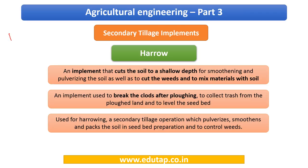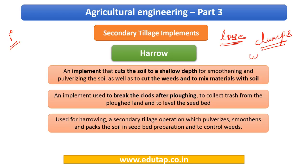We are now done with primary tillage implements and moving to secondary tillage implements. In primary tillage we break open and loosen the soil. Secondary tillage operations involve breaking the clods — clumps of soil left behind after plowing — and removing weeds. The harrow is one of the most basic implements used for these secondary tillage operations.